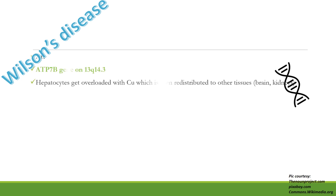Wilson's disease is an autosomal recessive condition in which the implicated gene ATP7B is located on chromosome 13q14.3, i.e. the long arm of chromosome 13. This gene codes for a copper-transporting protein in liver cells, which is responsible for incorporation of copper into ceruloplasmin — a copper-binding protein — and biliary copper excretion.